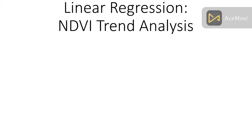Now we are talking about linear regression. Mainly when you want to identify the trend — not only for NDVI, but any other index such as a water index or soil-adjusted index — when you want to find out what is the trend for this index, we have to use linear regression. In Google Earth Engine platform we can easily apply the linear regression method and find out what is the trend for a specific region, where the vegetation loss is increasing or decreasing.